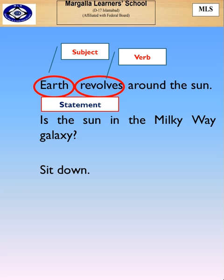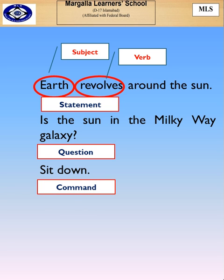'Is the sun in the Milky Way galaxy?' This is a question, as the question mark is indicating. 'Sit down.' It is a command. But these are all complete sentences, and you are completely understanding the meaning of what these sentences are trying to say.